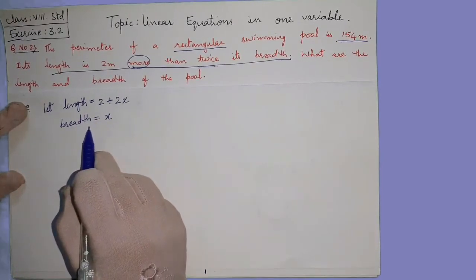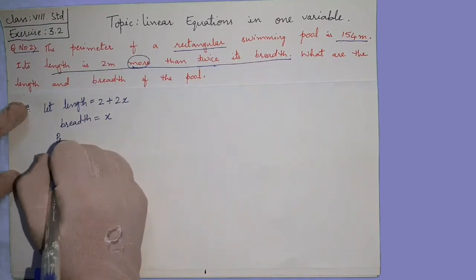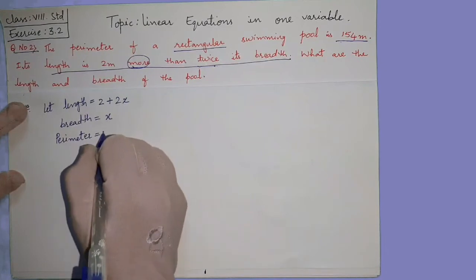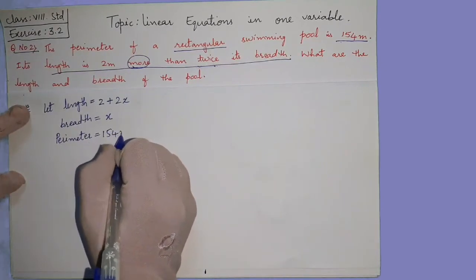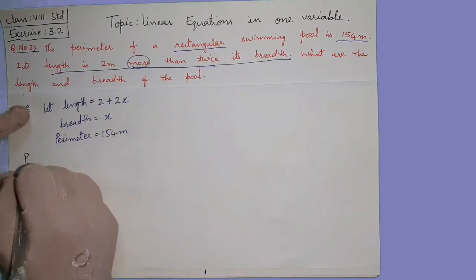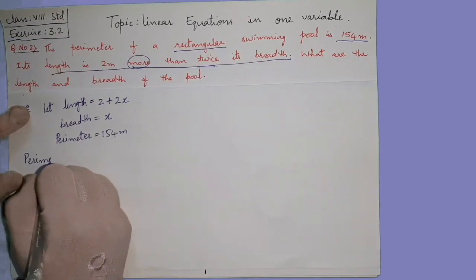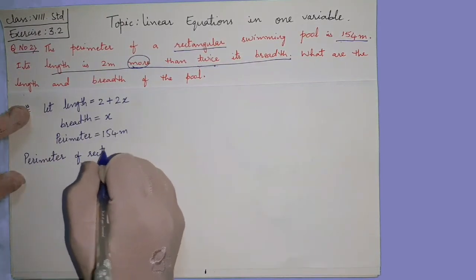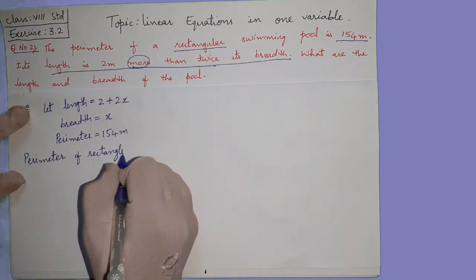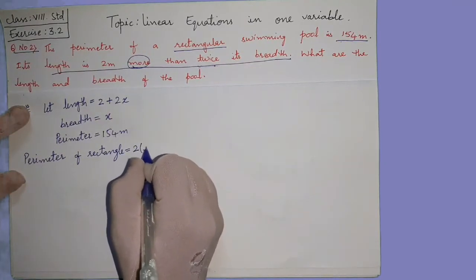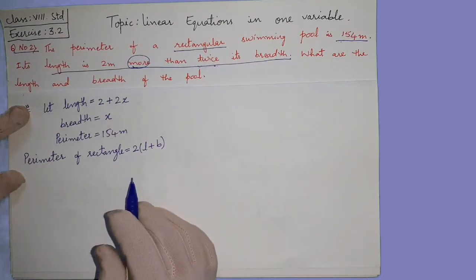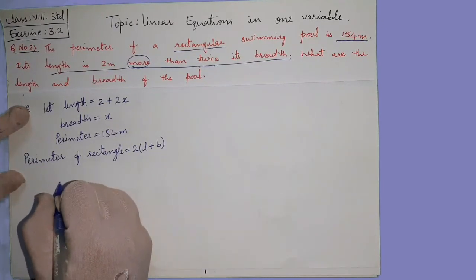Where x is nothing but the breadth and how much is the perimeter given? Perimeter is equal to 154 meters. Now we have to use the formula for perimeter of rectangle, which is 2 into l plus b. This all of you know, perimeter of rectangle is 2 into l plus b.